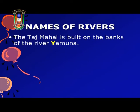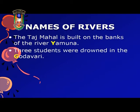Now, let us see how capital letters are used to indicate names of rivers. The Taj Mahal is built on the banks of the river Yamuna. Three students were drowned in the Godavari. Yamuna and Godavari are names of rivers and need to be capitalized. So, whether you are talking about the Brahmaputra, the Narmada, the Tapti, the Ganges or any other river, every time you use the name of a river, remember to begin it with a capital letter.